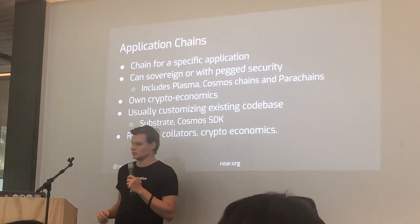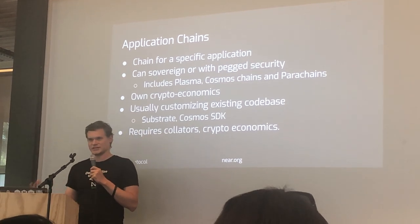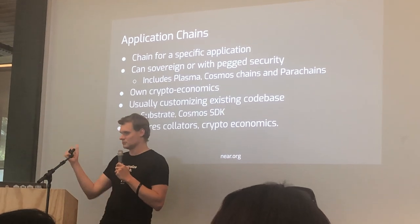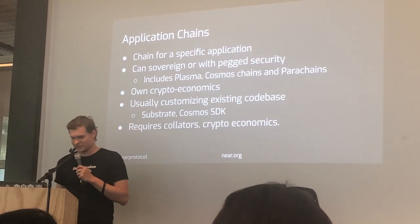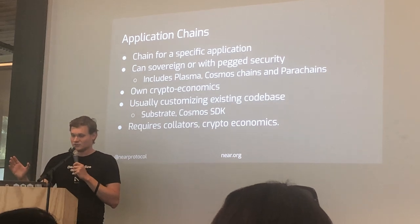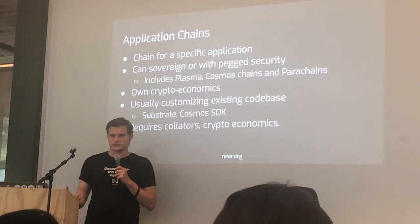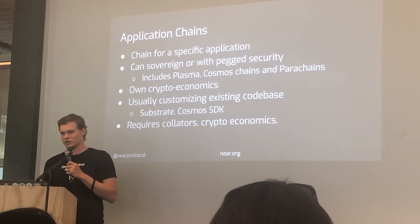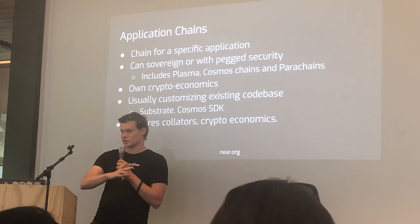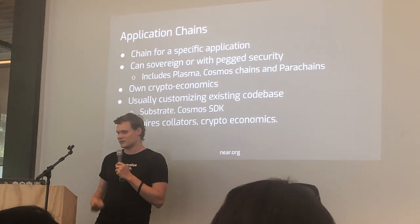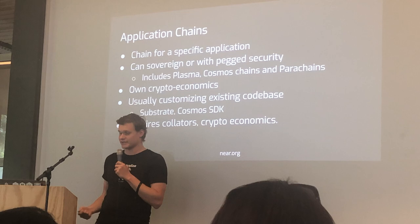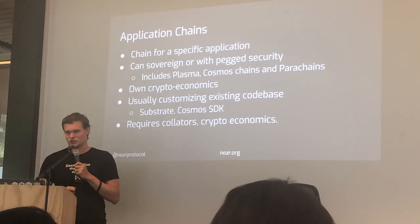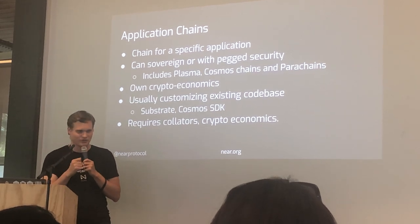There are usually two ways you can do it. One is you can start a sovereign chain — Cosmos is like an SDK to do that; you spin up Cosmos SDK, spin up a chain, and you're on your own. There's also shared security, which is what Polkadot offers: instead of building up your own security, you rely on shared security. Plasma is very similar, where the shared security is Ethereum — so Plasma is a part of chains to Ethereum.